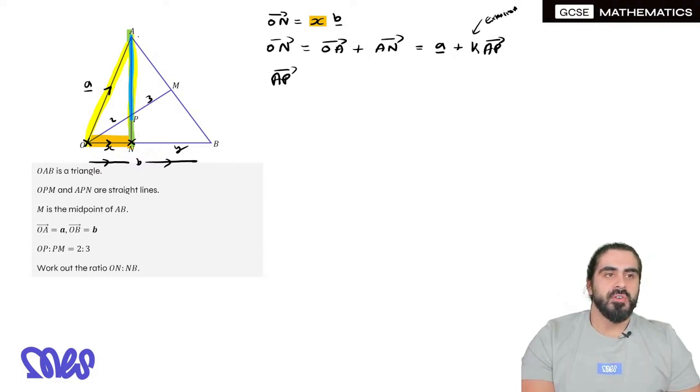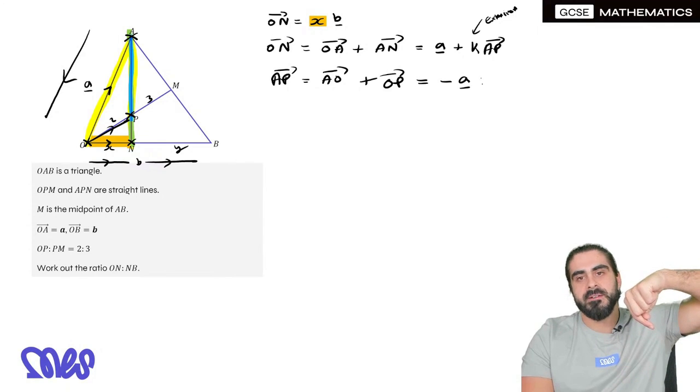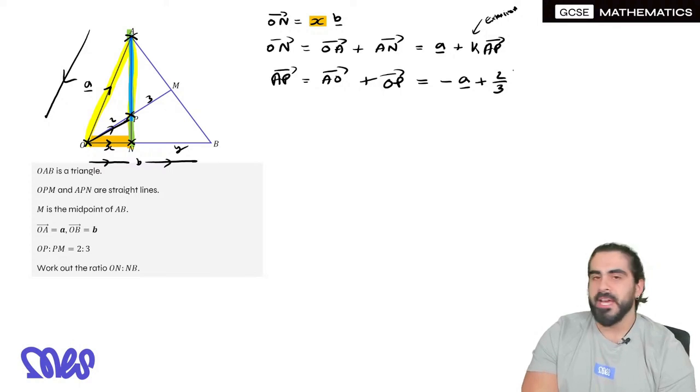Now, for us to go from A to P, we need to first go back on ourselves. We're going to go A to O, and then we're going to go to P. We're going to go from O to P. Now, A to O, we're going back on ourselves, so it's minus A. Two fifths of O to M. O to M.